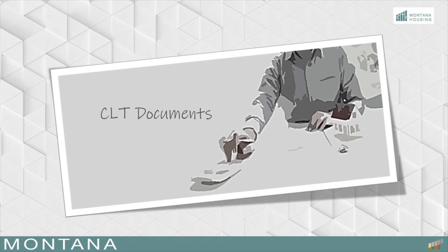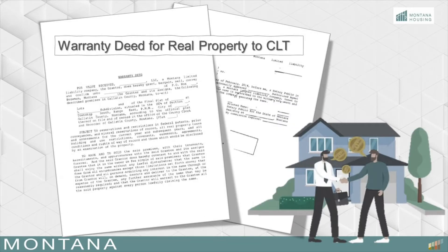Now let's discuss the documents included in undertaking a community land trust transaction. What are the special documents involved with the CLT at the time of post-purchase review? These documents are required with the submission for purchase for all CLTs. The warranty deed of real property to the CLT is needed if the CLT doesn't already own the land. The land is often being transferred to the CLT from a developer or seller on the day of closing. Simultaneously, the home is sold separately to the income-qualified buyer.